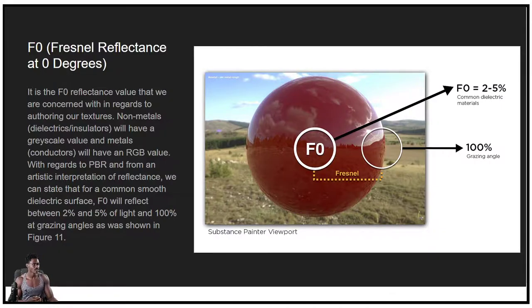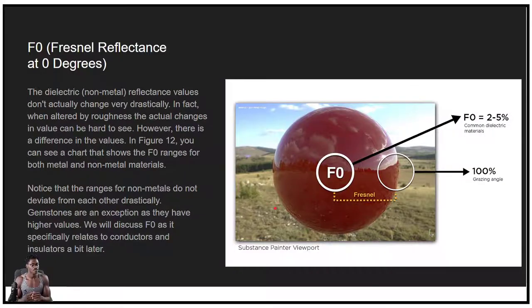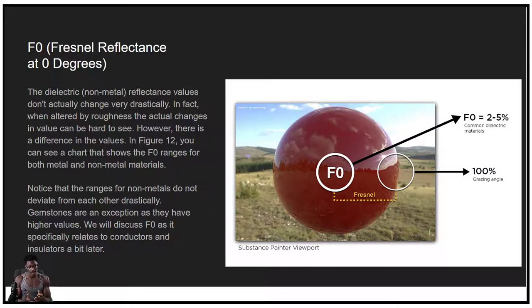For a common smooth dielectric surface, F0 will reflect between 2% and 5% of light and 100% at grazing angles. The dielectric or non-metal reflectance values don't actually change very drastically. When altered by roughness, the actual changes in values can be hard to see. There's a chart showing the F0 ranges for both metals and non-metal materials — notice the ranges for non-metals don't deviate drastically from each other. Gemstones are an exception as they have higher values. We'll discuss F0 as it relates to conductors and insulators more later.